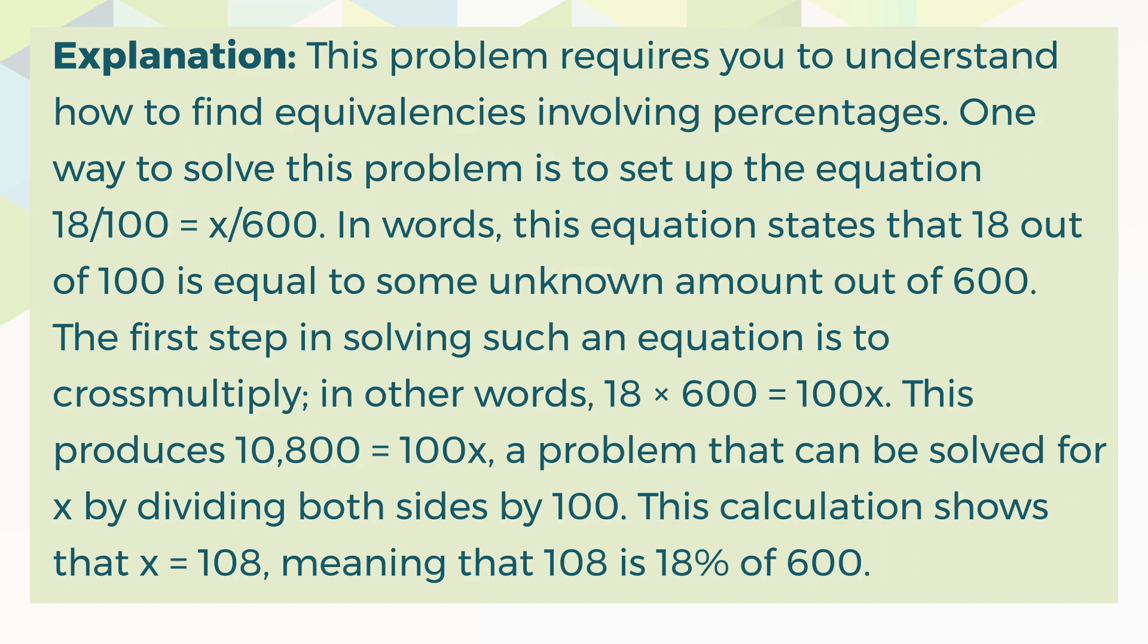This produces 10,800 is equal to 100 multiplied by X, a problem that can be solved for X by dividing both sides by 100. This calculation shows that X is equal to 108, meaning that 108 is 18% of 600.